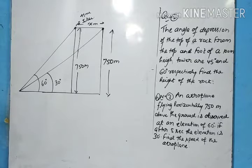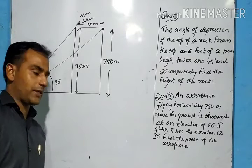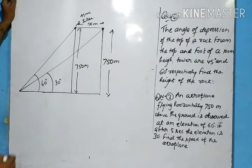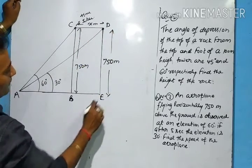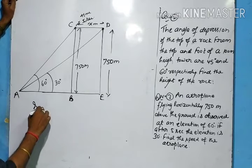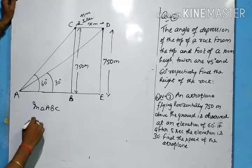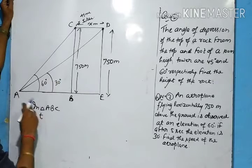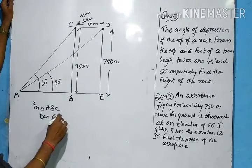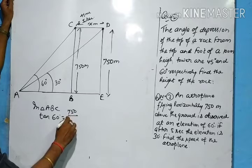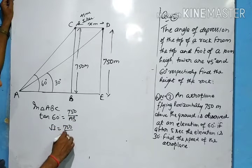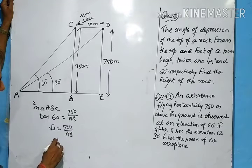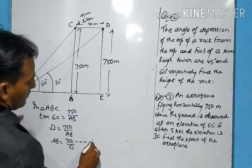We have two triangles — label the points A, B, C, D, and E. In triangle ABC, tan 60° = 750/AB. tan 60° is √3, so AB = 750/√3. This is equation number one.